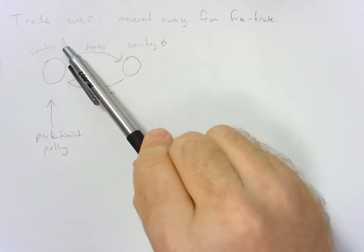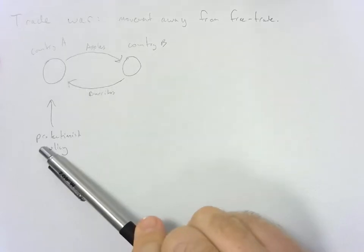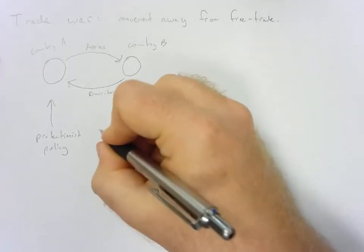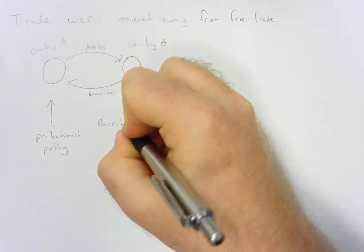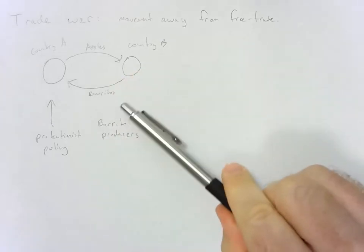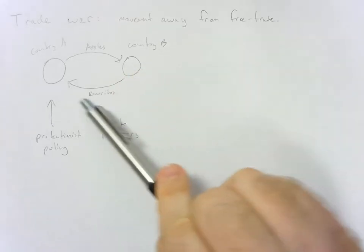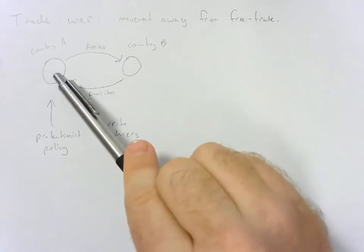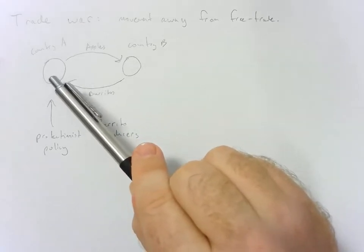Now imagine country A starts to enact some protectionist policies. So they say, whoa, our burrito producers cannot compete on the global market. We're importing all of these cheap burritos from country B, and our domestic burrito producers just can't compete. What can we do?